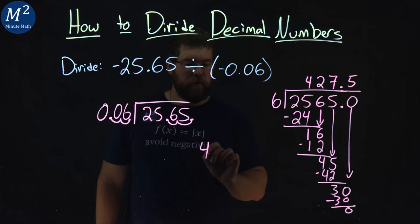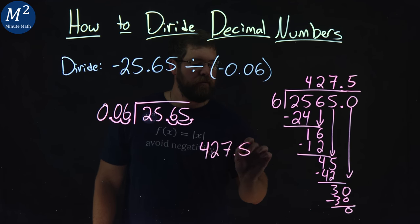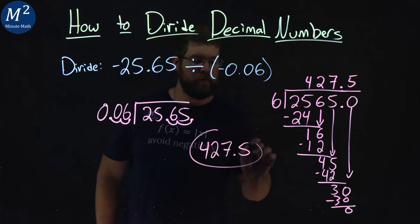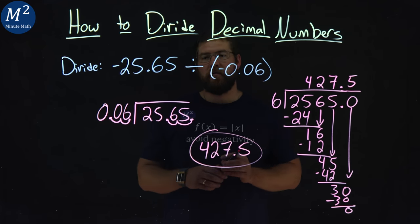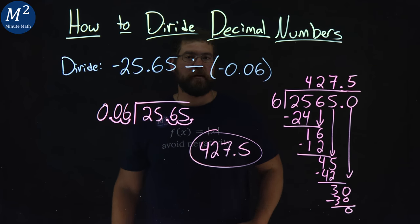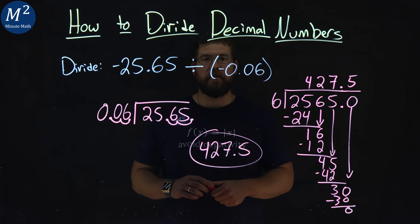So we have 427.5 here. Again, we said a negative divided by negative is a positive. And so, negative 25.65 divided by a negative 0.06 comes out to be 427.5.